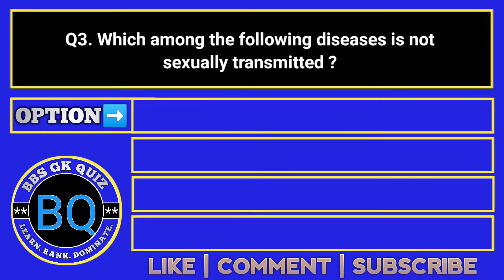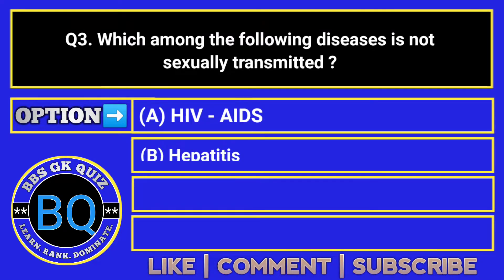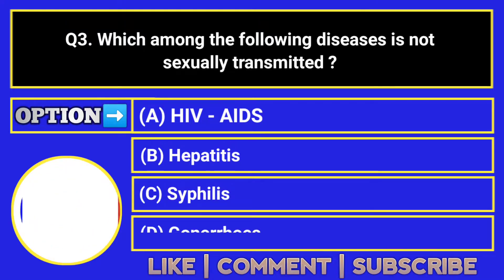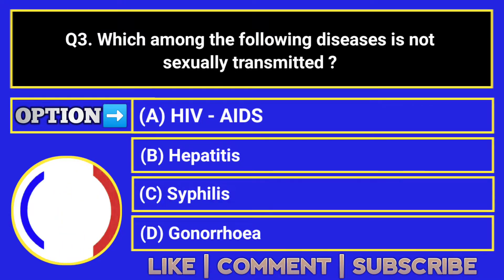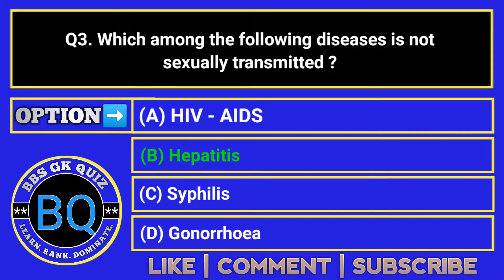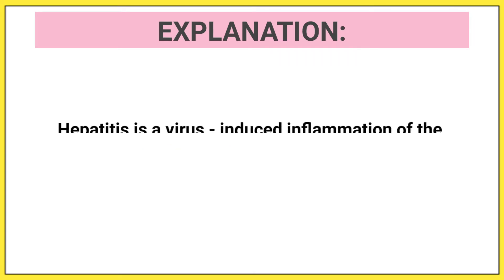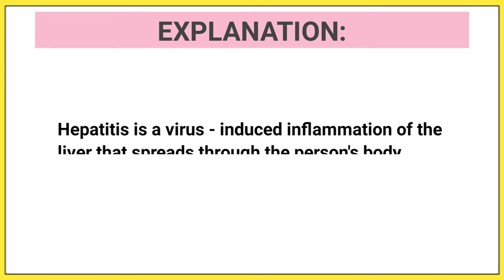Which among the following diseases is not sexually transmitted? The correct answer is option B. Hepatitis is a virus-induced inflammation of the liver that spreads through the person's body.